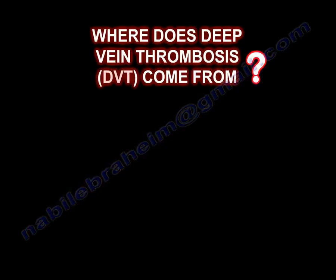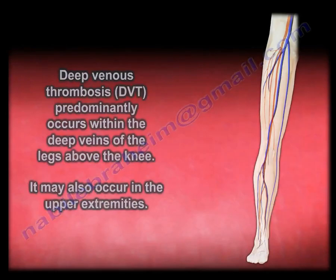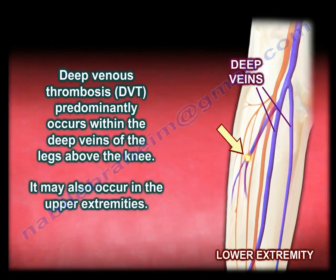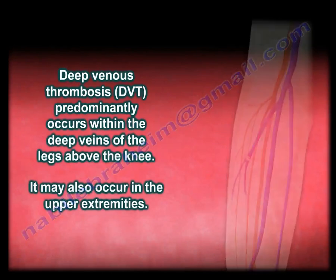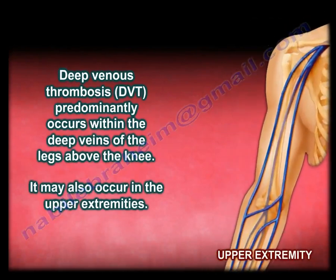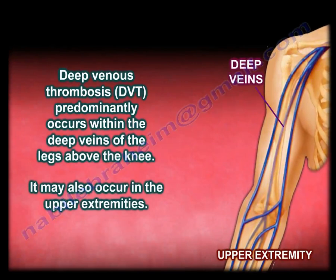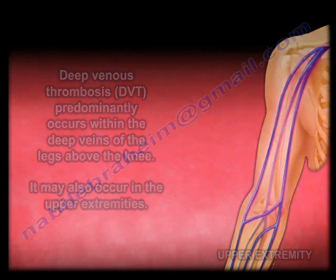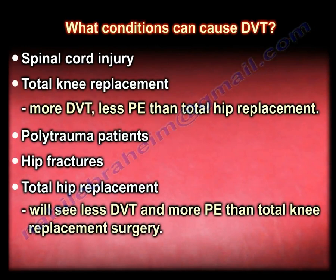Deep venous thrombosis predominantly occurs within the deep veins of the legs above the knee, but may also occur in the upper extremities. Conditions that can cause DVT include spinal cord injury, total knee replacement — which has more DVT but less PE than total hip replacement — polytrauma, and hip fractures. Total hip replacements have less DVT but more PE than total knee replacement.